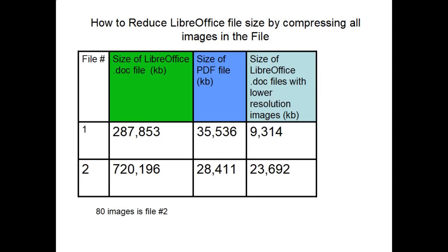After you have your first image compressed, just work your way through the rest of the file — on each image, click it, right-click it, choose compress, hit OK, and keep moving on until you've done all the images. I do not know of a way in LibreOffice to reduce the resolution of every image in one step, so it does take a little bit of time.